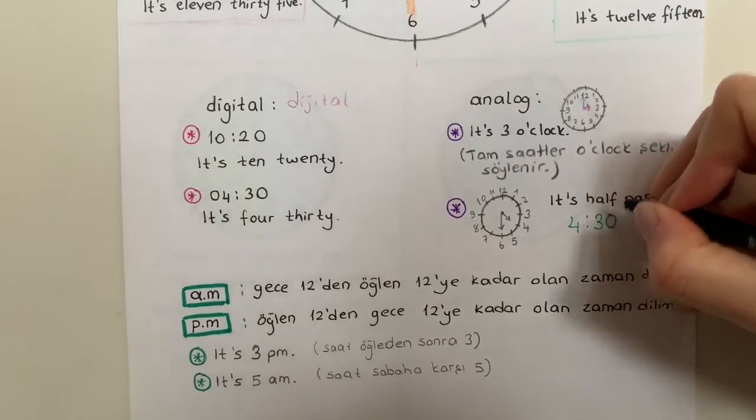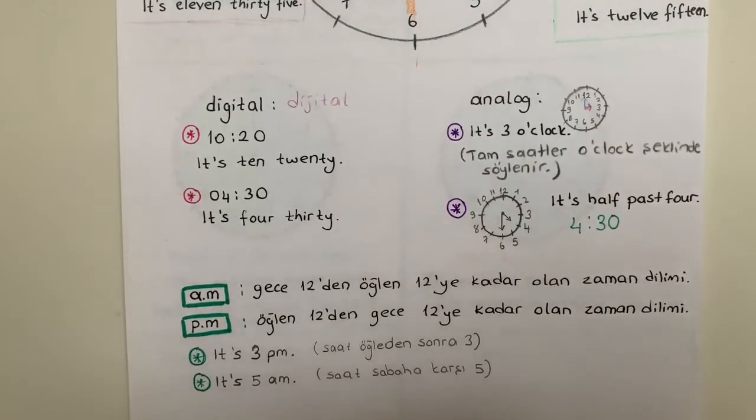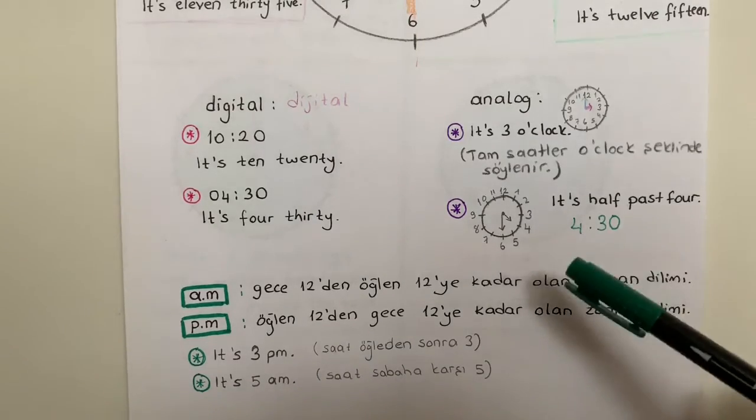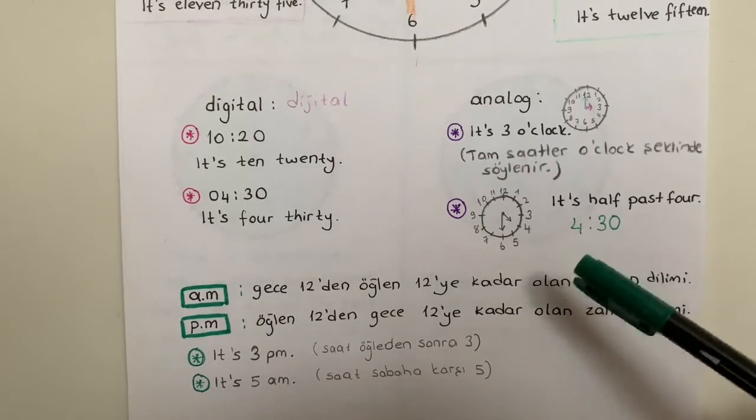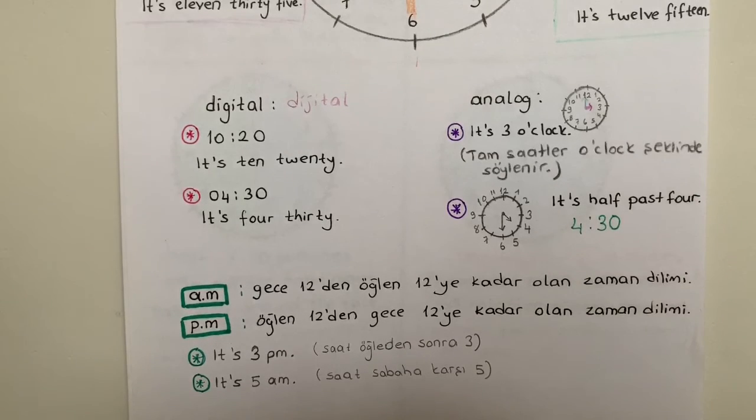you can write it in digital first to remember, and then you can say it is half past four. And I have AM and PM.